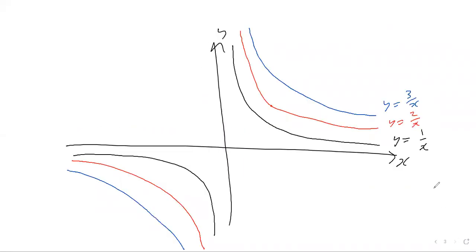When you make the number on the numerator bigger, the graph just gets bigger. For example, y equals 2 over x — this red graph — is just double the original black graph y equals 1 over x, because you've doubled the y-coordinate by multiplying by two. So if at x equals 1 the black graph gives 1, the red graph gives 2.